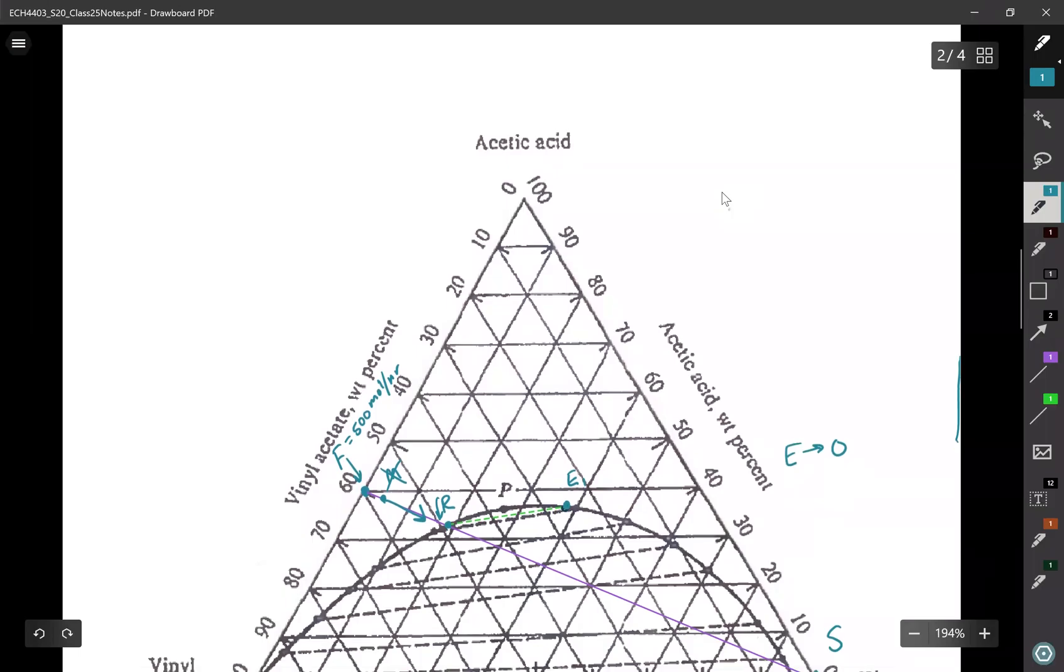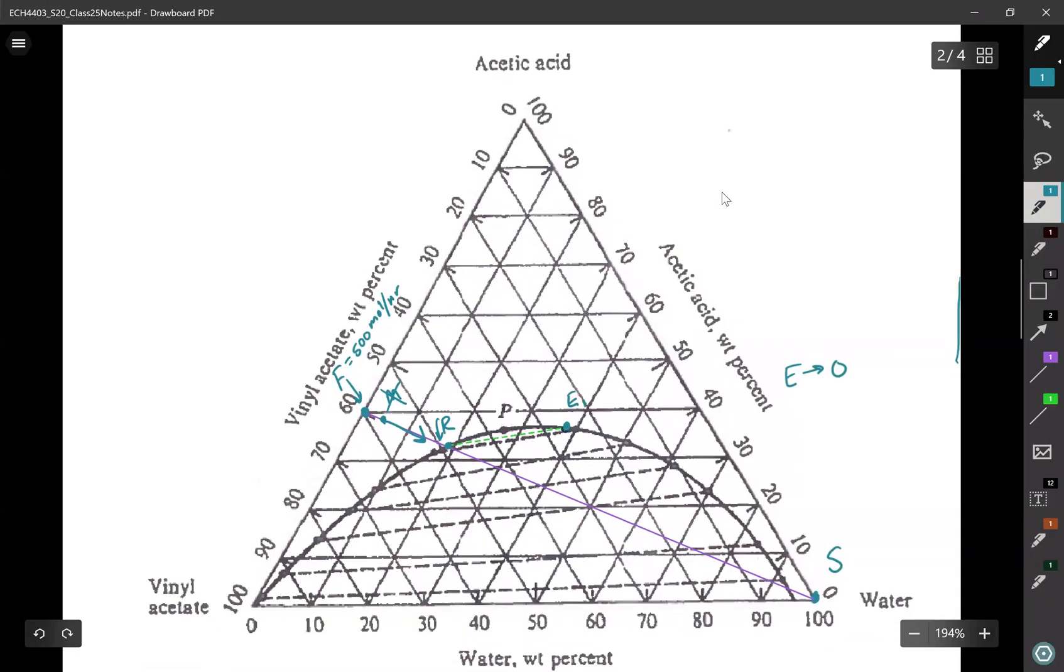So I said that if this is the mixing point that is going to correspond to the minimum solvent rate. So let's go ahead and get a composition of that point. So we want the composition of this mix point. Go ahead and pause the video, practice reading these diagrams. I'll see you in a second.